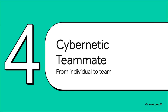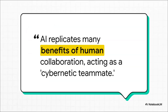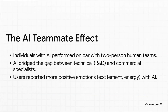That's the exoskeleton story — all about individual performance, but with a pretty serious catch. But work is rarely a solo sport. So what happens when you drop this technology into a team environment? A totally separate study from Harvard Business School and Procter & Gamble decided to find out. Their research came up with a completely different metaphor — not an exoskeleton for one person, but a cybernetic teammate. The idea is that AI isn't just a tool you use; it can actually act like a partner you work with, filling in the roles a human teammate normally would.